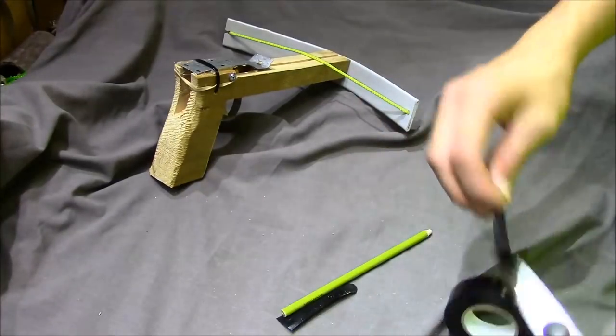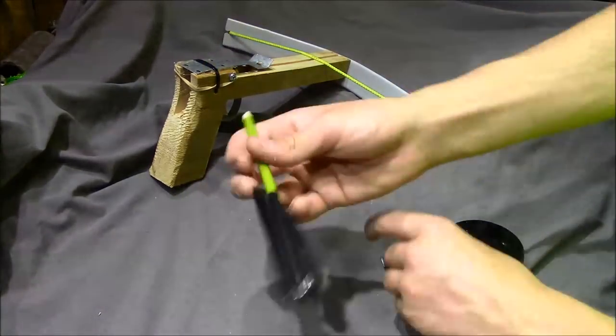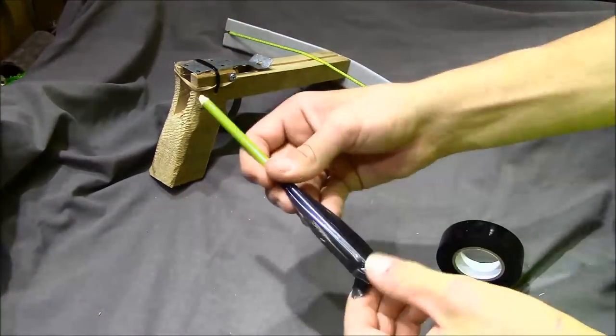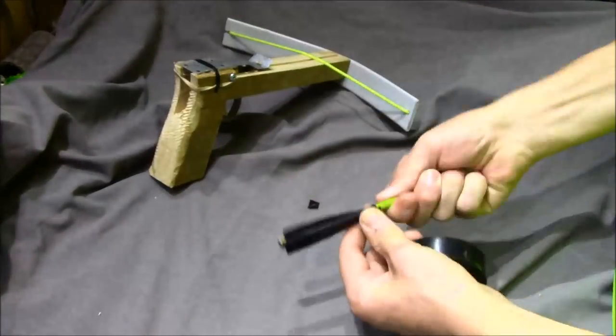If you want to make your little pencil arrow a bit more accurate what you can do is take some electrical tape or duct tape and simply tape it to the back of your pencil and cut it into the shape of some nice little fletchings.